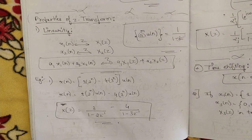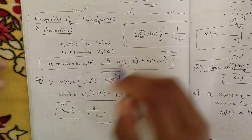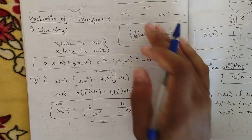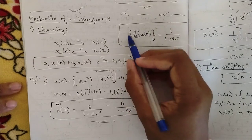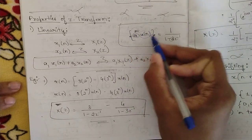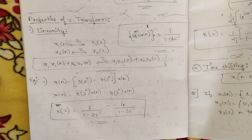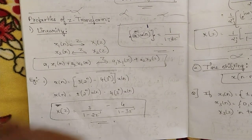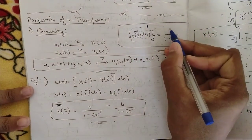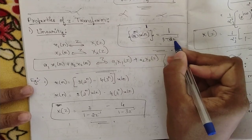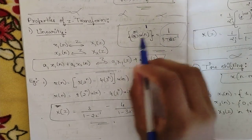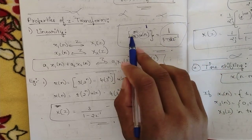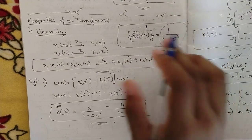Before knowing the linearity property, you should know one thing: a^n · u(n). If you want to convert this to the Z-plane, since u(n) is always equal to 1 for all values of n, we write it in the Z-domain as 1 divided by (1 minus a·z⁻¹). So the general formula is: a^n · u(n) = 1 / (1 − a·z⁻¹), where the value of 'a' varies. You should remember this.